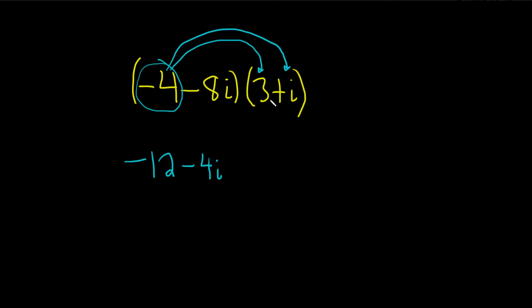So again, we took the negative 4 and multiplied it by each of these. Now we go to the next one. So negative 8i times 3 is negative 24i, and then the last one would be negative 8i times i.